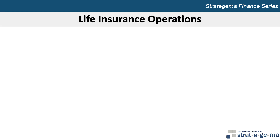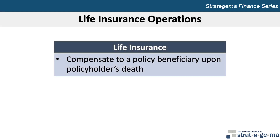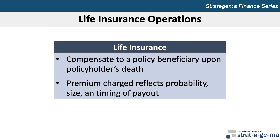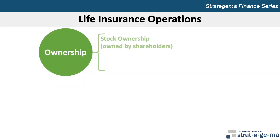Now let's move on to life insurance operations. Life insurance companies compensate or provide benefits to the beneficiary of a policy upon the policyholder's death. They charge policyholders a premium that should reflect the probability of making a payment to the beneficiary, as well as the size and timing of the payment. Insurance companies have either stock ownership, meaning that they're owned by shareholders, or mutual ownership, meaning that they're owned by their policyholders.